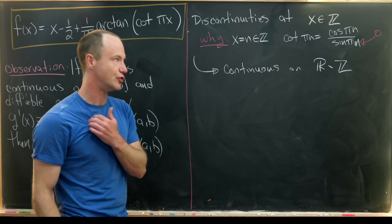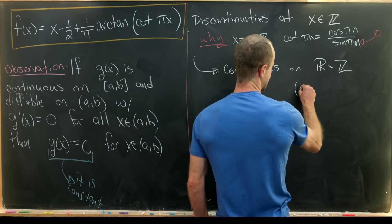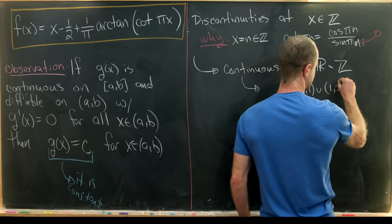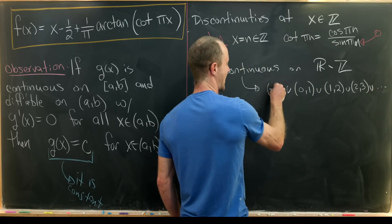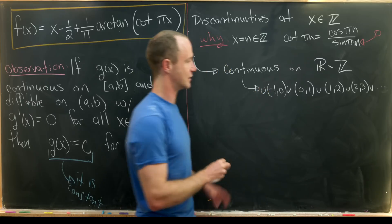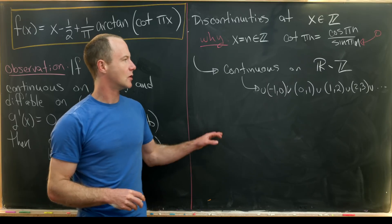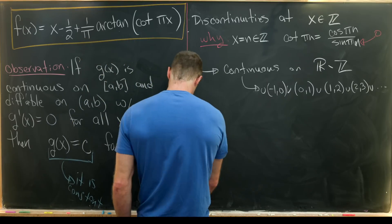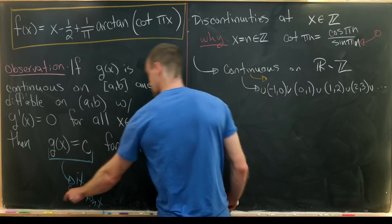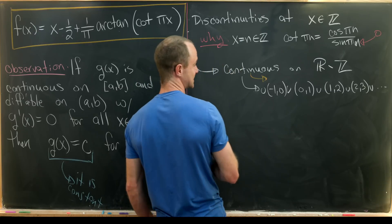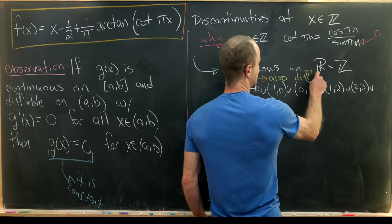That can be written as a union of open intervals: (0,1) union (1,2) union (2,3) and so on, extending in the negative direction as well — an infinite union of these intervals. Not only is the function continuous there, but it's also differentiable there, which is clear from the construction of the function in terms of functions we know to be continuous and differentiable in this region.